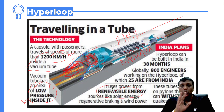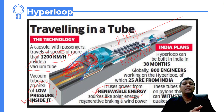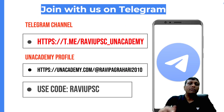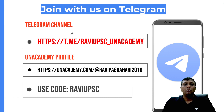The hyperloop train will not consume much power or electricity, so renewable energy will be sufficient to run it. Altogether, the hyperloop train will be totally sustainable. PDFs are available for download on the Telegram channel.